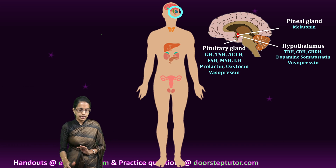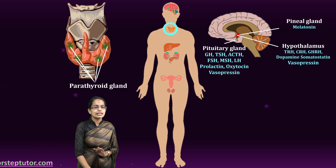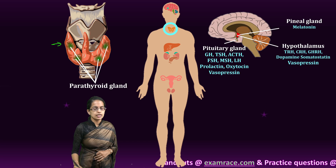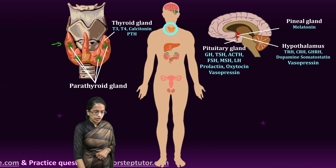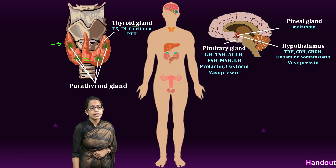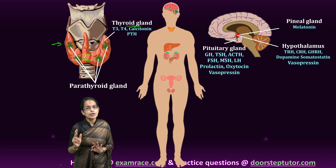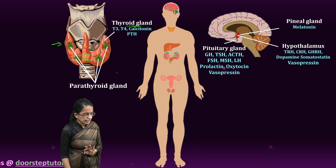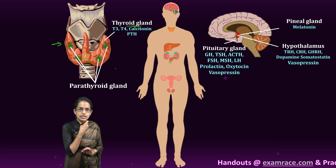Moving on to the neck area, there are two important glands. The first is the thyroid gland. The thyroid has two lobes connected by an isthmus, as you can see from its shape here. On the thyroid, the four green ones are the parathyroid glands. Thyroid, as we know, is tested via T3 and T4 in blood samples, and it is responsible for two important secretions: thyroxin and calcitonin. The thyroid gland is present on either side of the trachea, or windpipe.